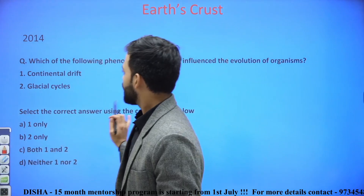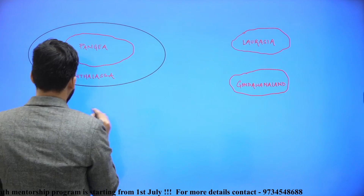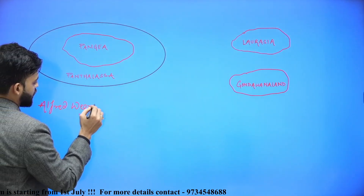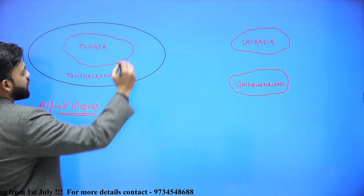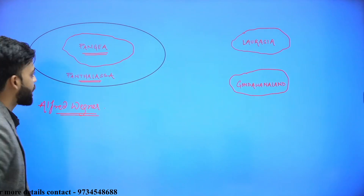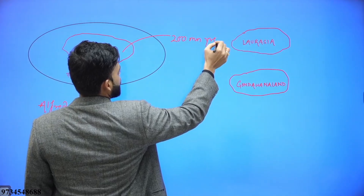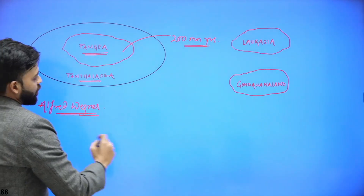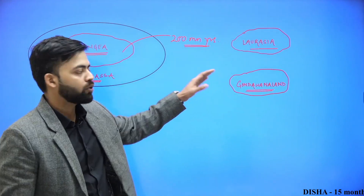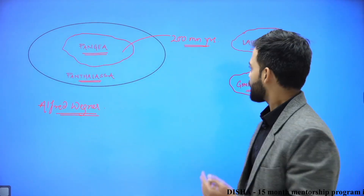Now let us look at continental drift. This continental drift theory was given by Alfred Wegener, and he suggested that there was one continent, Pangea, and one sea, Panthalassa. Pangea was one super continent around 200 million years ago. This super continent broke into Laurasia and Gondwana land, which further broke into the present continents like Africa, Australia, North America, South America, and Europe.